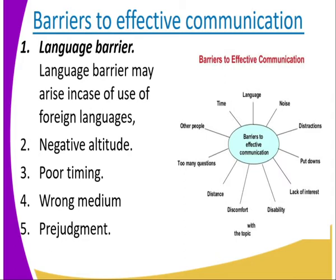Number two is negative attitude. When we are passing information from one person to another, if the receiver has a negative attitude towards the sender, then he or she won't decode the information. Just because of that negative attitude, he does not want to engage — he is looking down on the sender — so no effective communication takes place.